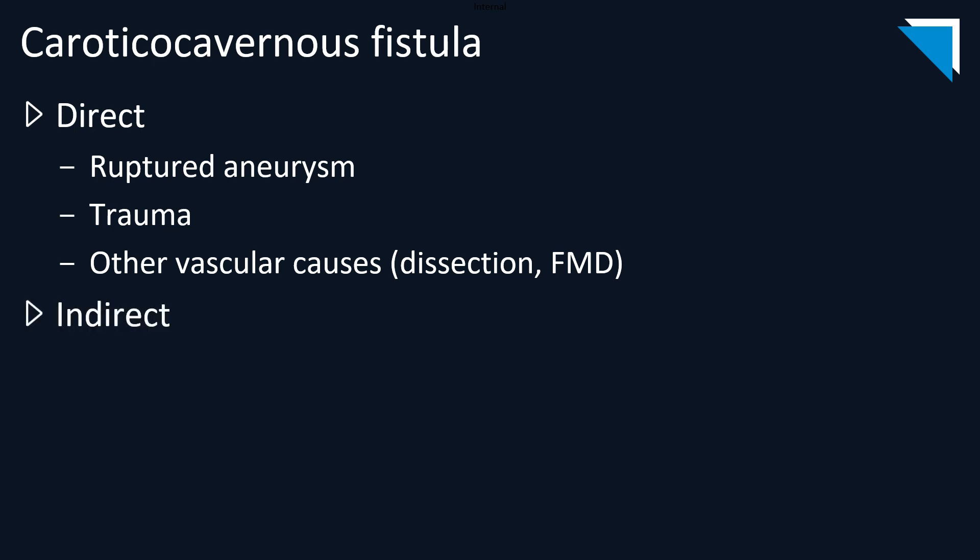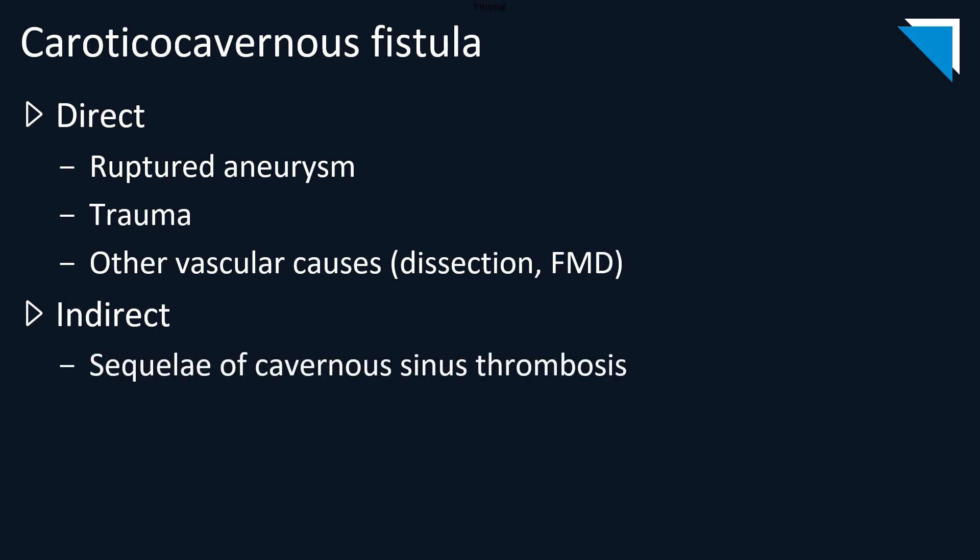Indirect fistulae involve multiple branches of the internal and/or external carotid arteries, and are felt to reflect sequelae of underlying cavernous sinus thrombosis. There are also associations with pregnancy and chronic sinusitis. Pulsatile exophthalmos is the most common presenting symptom. Other common symptoms include proptosis, progressive visual loss, and subconjunctival hemorrhage.